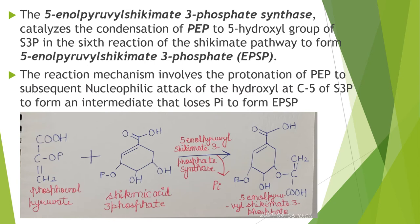The 5-enolpyruvylshikimate-3-phosphate synthase (EPSPS) catalyzes the condensation of phosphoenolpyruvate to the 5-hydroxyl group of shikimate-3-phosphate in the sixth reaction of the shikimate pathway to form 5-enolpyruvylshikimate-3-phosphate (EPSP). The reaction mechanism involves protonation of phosphoenolpyruvate followed by nucleophilic attack of the hydroxyl at C5 of shikimate-3-phosphate to form an intermediate that loses inorganic phosphate to form EPSP.